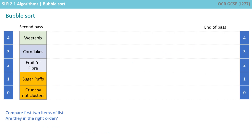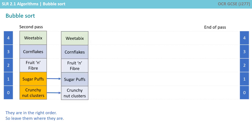Weetabix is in the correct place, so we can ignore that, but we repeat the algorithm, starting with comparing Sugar Puffs and Crunch Nut Clusters, because they're the first two items of the list. Are they in the right order? They are, so we leave them where they are.